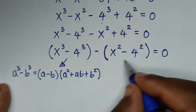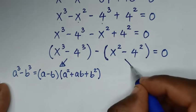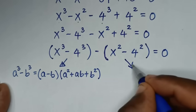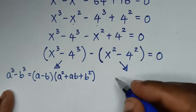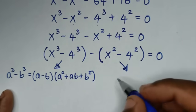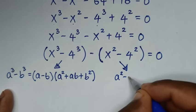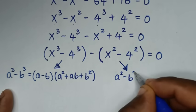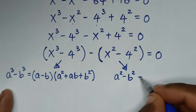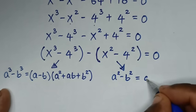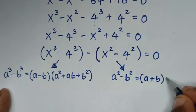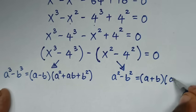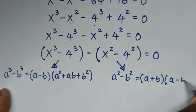The expression x² minus 4² is in the form of difference of two squares, so we'll apply the rule: A² minus B² is equal to (A plus B)(A minus B).